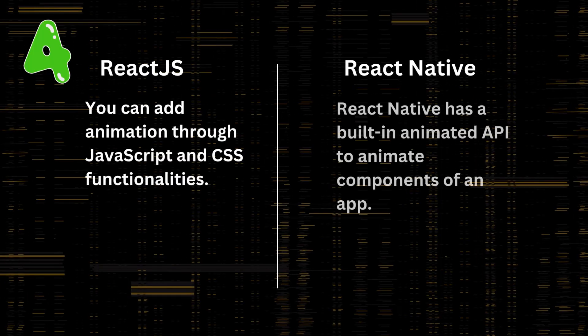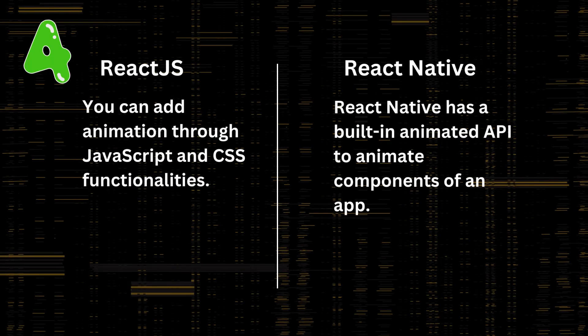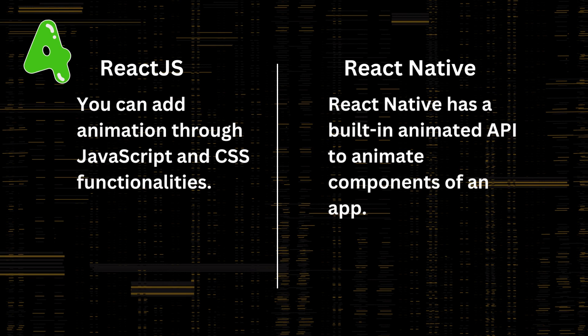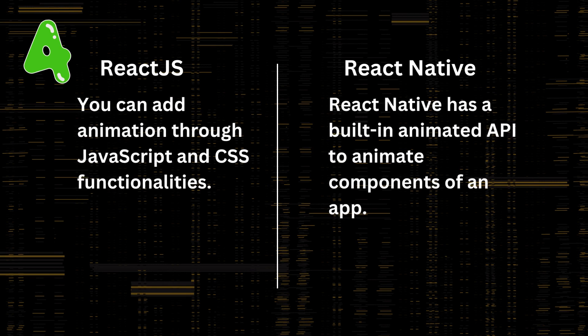Number 4: In React.js, you can add animation through JavaScript and CSS functionalities. In React Native, it has a built-in Animated API to animate components of an app.